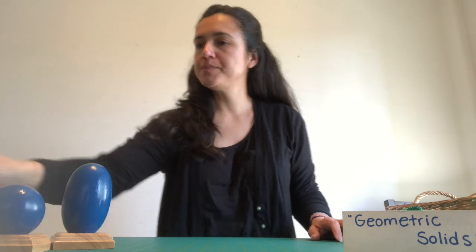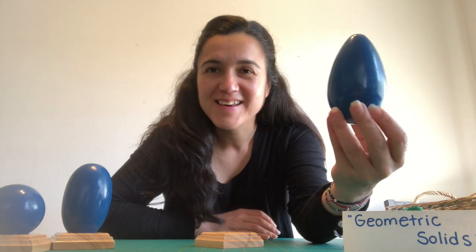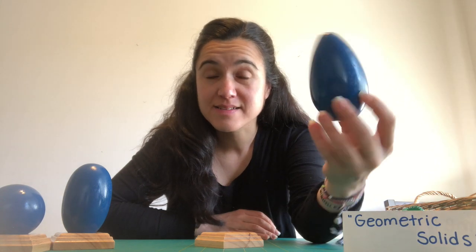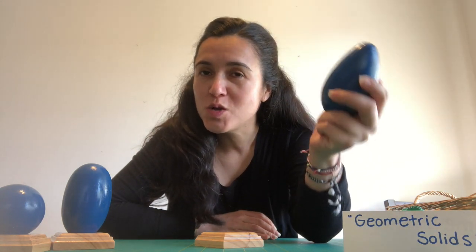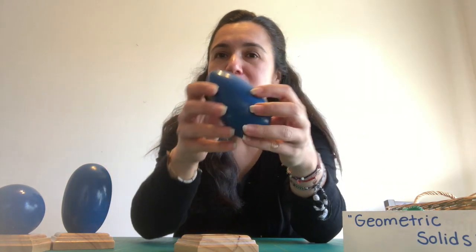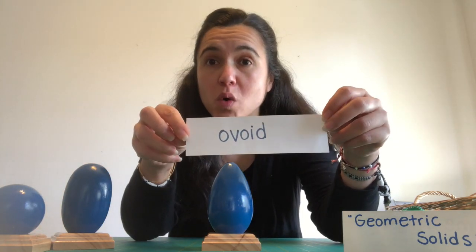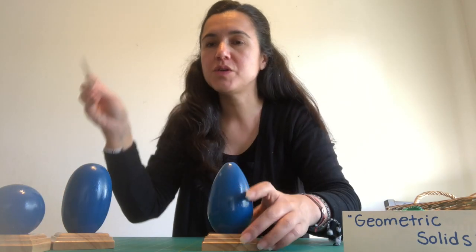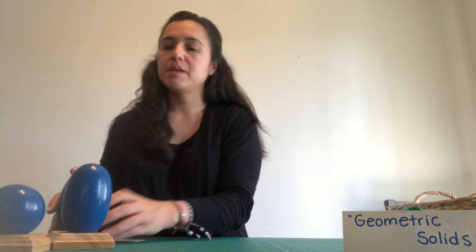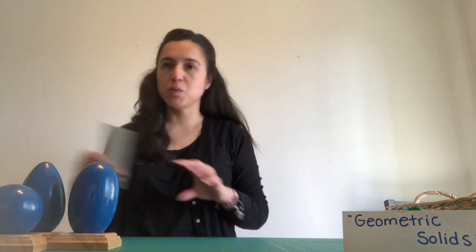The next one is not an egg. It's a geometric solid and it looks like an oval, like an egg. But let me tell you — its name is ovoid. So the ovoid, I'm going to put it right there.